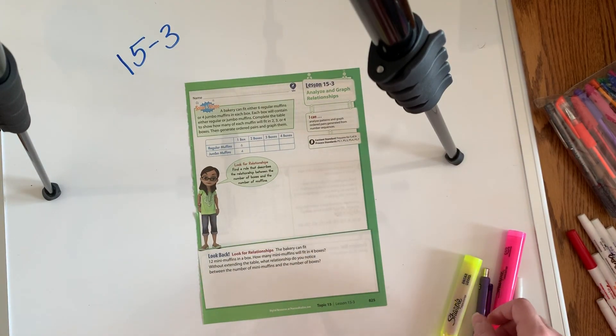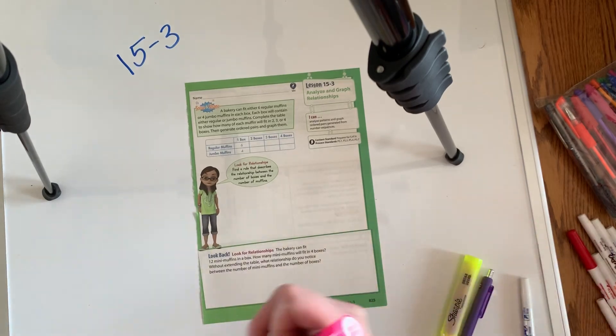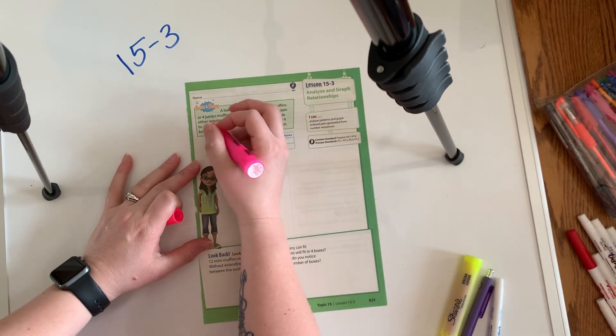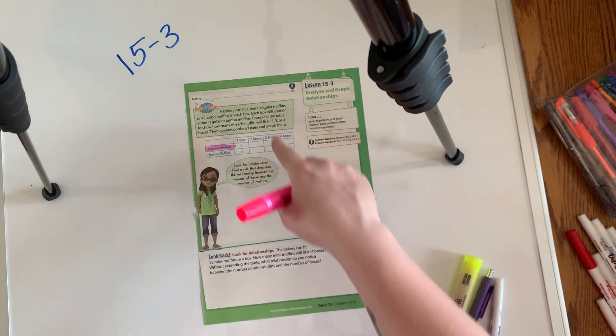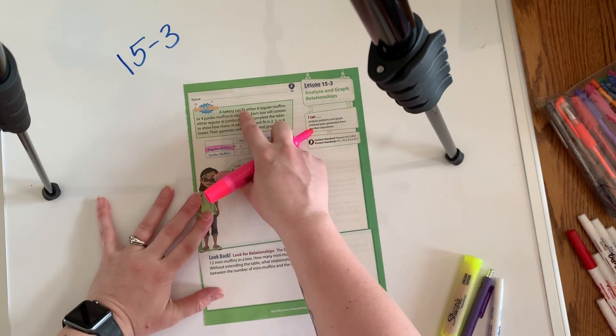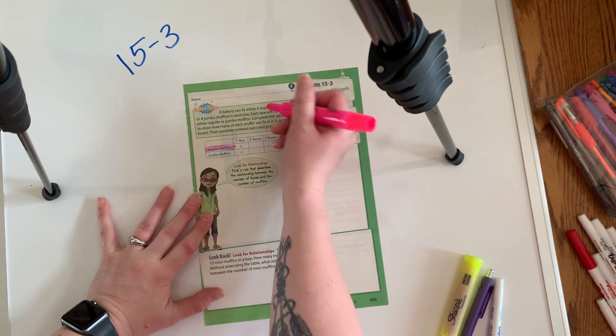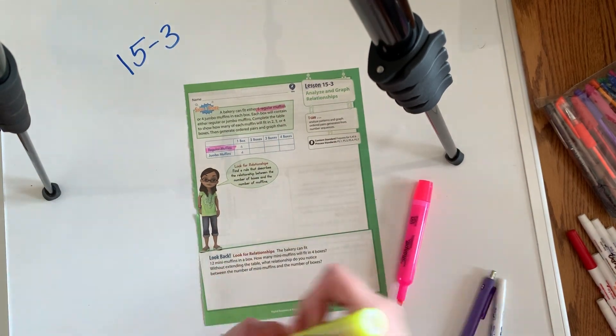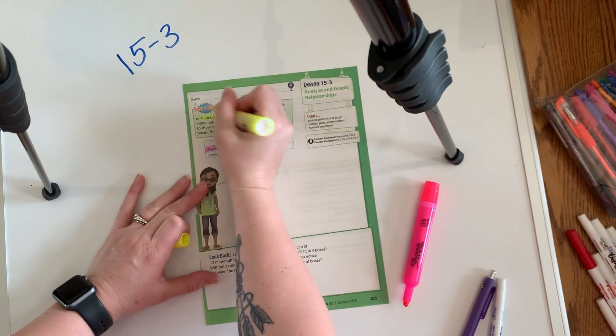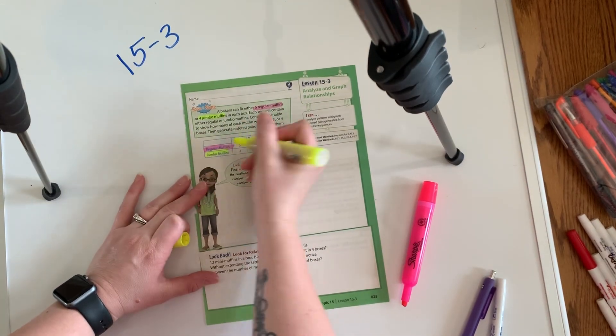So I'm going to do the same thing I did in the last video where I'm going to highlight some stuff. So when we're talking about regular muffins, I'm going to highlight that pink up here just to kind of keep myself straight. So it says a bakery can fit either six regular muffins or four jumbo muffins in each box.